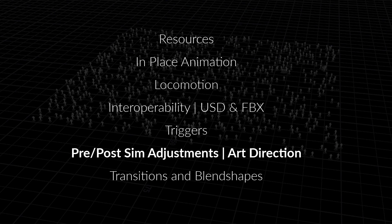Section five I've titled pre and post simulation adjustment — in brackets, art direction. This covers ways to get control of your crowd sim and address art direction. Some subjects cover two different stages: one is before the sim or during the sim while it's being run, and the other is post-sim — what you can do after you've simulated to address art direction.